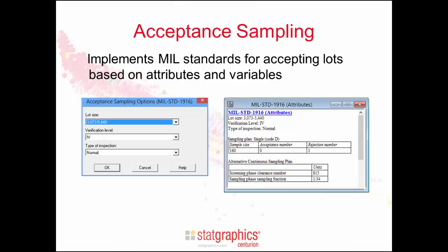The new acceptance sampling plans implement various military standards for accepting lots based upon attributes and variables. The user specifies the lot size, the verification level, and the type of inspection. StatGraphics then determines the number of items that need to be inspected and the acceptance number and rejection number of the plan.